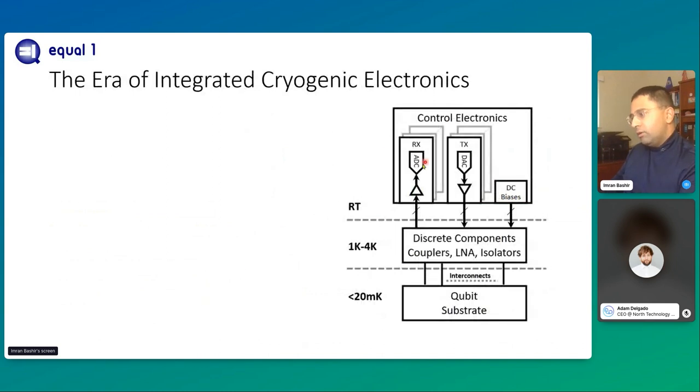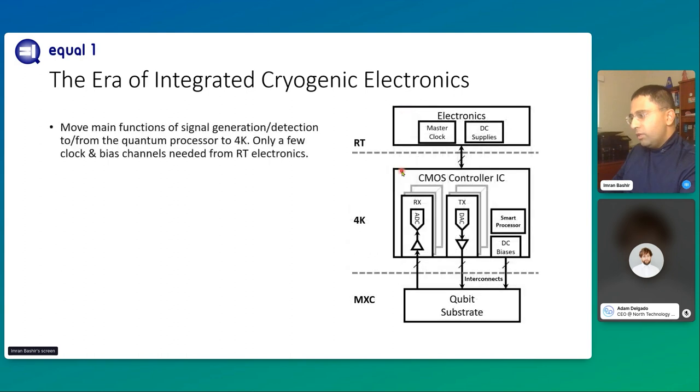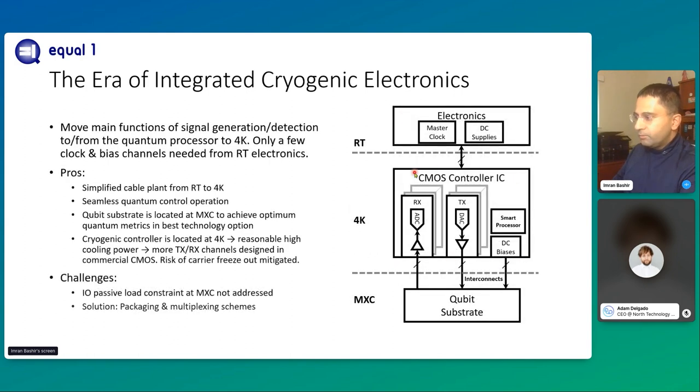Well, the idea there is to take our current situation where we have room temperature electronics and move it to four Kelvin stage in an integrated circuit solution shown here. Now, with this kind of a solution, we have done a couple of things. First advantage is we have dramatically simplified our cable plant going down the cryostat from room temperature to four Kelvin. Number two, our cryogenic controller IC and qubit are now sitting relatively close to each other, and that allows us a little more seamless control between controller and readout operation. Third, our qubit substrate is sitting at 20 mK stage. Our cryogenic control IC is four Kelvin stage. They can be designed in their native substrates for optimum performance, and they're isolated. Fourth, we're sitting at four Kelvin with our controller IC, which gives us 1.5 watts of cooling power, and that's quite a lot. And with that, you can stack many transmit receive chains, and that helps you in scaling your cryogenic controller IC solution for a large qubit array.